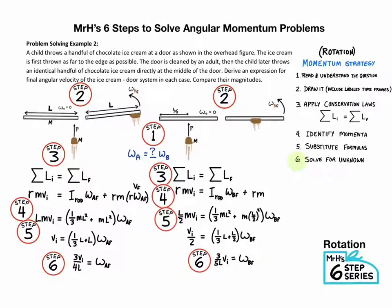So three fifths compared to three fourths. It appears that the original case where we hit the door right at the edge, we end up getting a greater final angular velocity. Now that kind of makes sense, since we want to push a door further away from the pivot point to have a greater effect on twisting it.